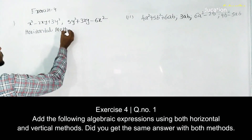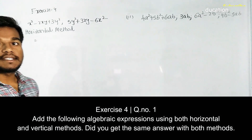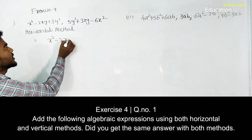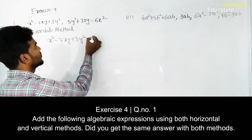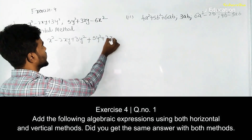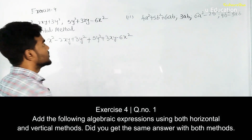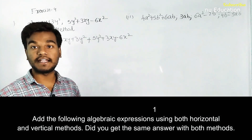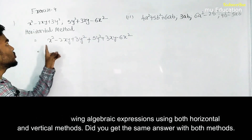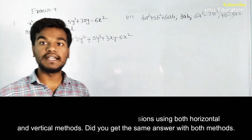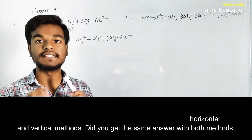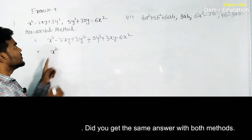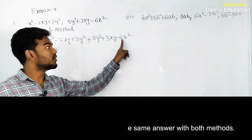For the horizontal method, we are asked to add both expressions: x² minus 2xy plus 3y², plus 5y² plus 3xy minus 6x². It is better to write all the x² terms, y² terms, xy terms, x terms, y terms, and numerical values at the same place. So x² — is there any other x² term? Yes, the last one is minus 6x².